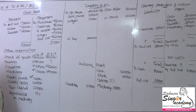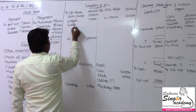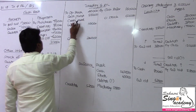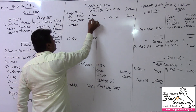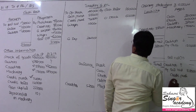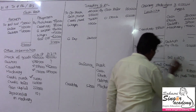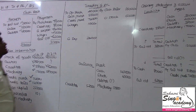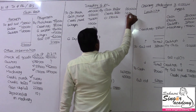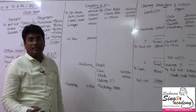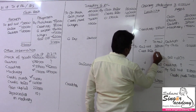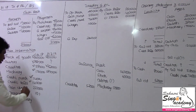Credit purchases should be posted twice — once in the Purchases Account and once in the Creditors Account. Credit purchases value being 74,000 rupees. Credit sales should also be posted twice — once in the Sales Account and once in the Debtors Account. Credit sales value being 1,40,000 rupees.